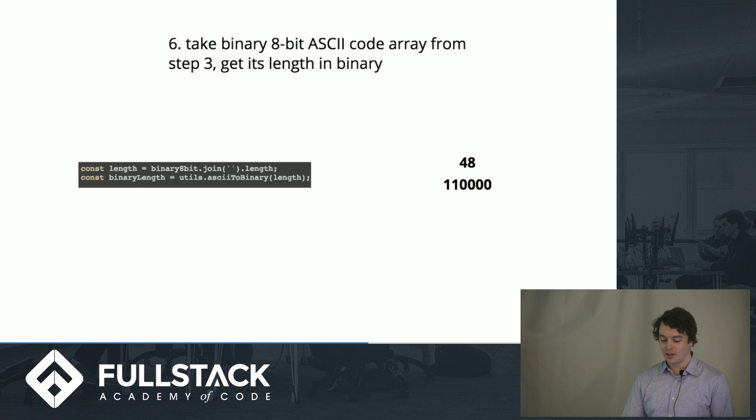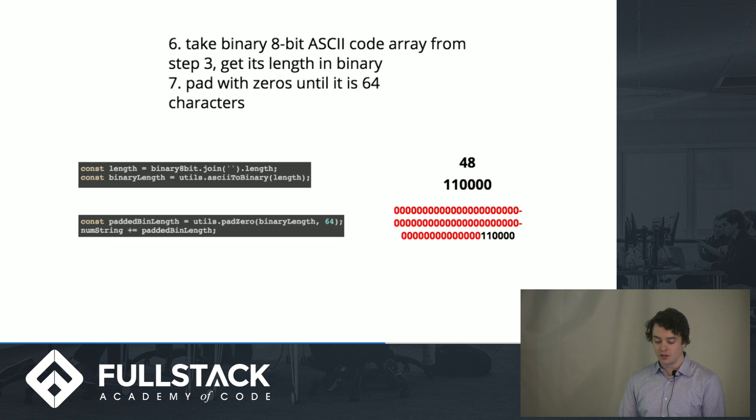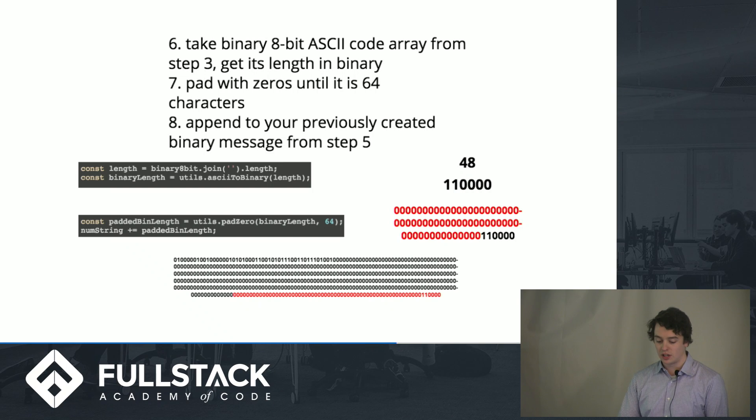So then you go back to step 3, take our 8-bit ASCII code array, take its length, and convert that to binary. Pad that with 0s at the front until it's 64 characters, and then we just stick that on this long binary message from step 5. If you want to count all those numbers, you would see that this is 512 characters in length. If we had a longer input, we would just have multiple chunks of these 512-character things, because no matter how big your input, this will be a string of a length that's divisible equally by 512, and that's really important.